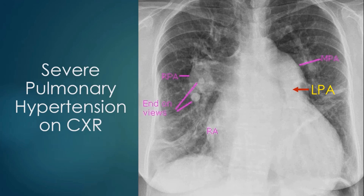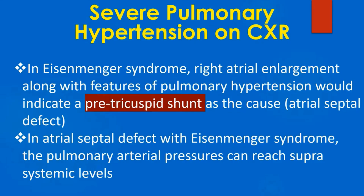The presence of end-on views of multiple pulmonary arterial branches would suggest a significant left-to-right shunt as the cause of pulmonary hypertension. In Eisenmenger syndrome, right atrial enlargement along with features of pulmonary hypertension would indicate a pre-tricuspid shunt as the cause.